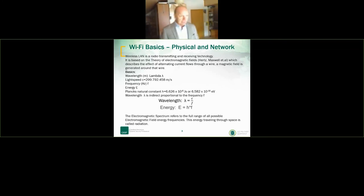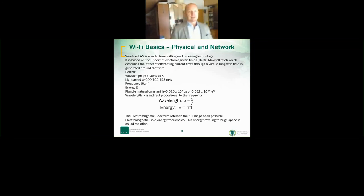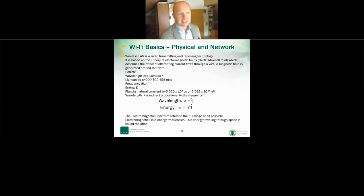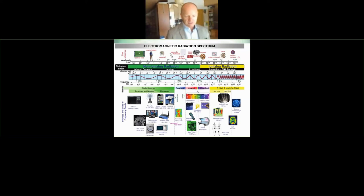The electromagnetic spectrum we're talking about for Wi-Fi refers to the full range of all possible electromagnetic field energy frequencies. This energy, put into alternating current through space, is called radiation, which we use for Wi-Fi networks. I looked for many diagrams — it's very colorful, but it shows very well how all these different physical properties are related.